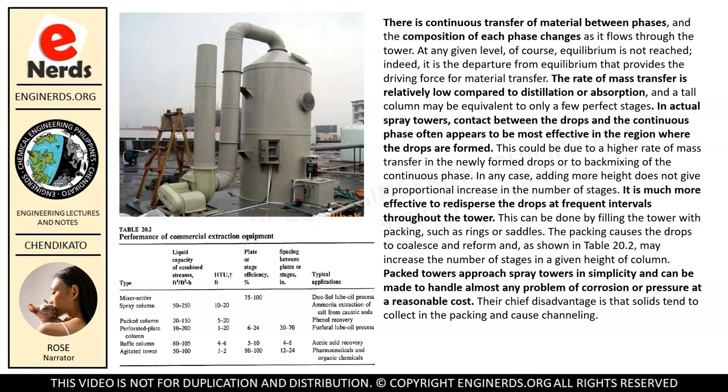It is much more effective to re-disperse the drops at frequent intervals throughout the tower. This can be done by filling the tower with packing, such as rings or saddles. The packing causes the drops to coalesce and reform and, as shown in Table 20.2, may increase the number of stages in a given height of column. Packed towers approach spray towers in simplicity and can handle almost any problem of corrosion or pressure at a reasonable cost. Their chief disadvantage is that solids tend to collect in the packing and cause channeling.